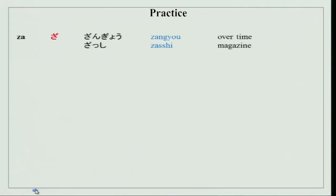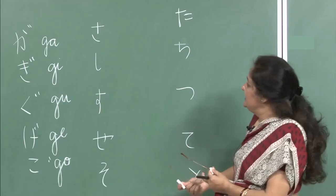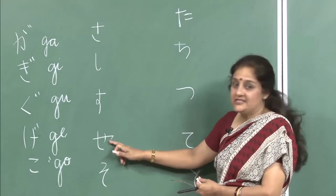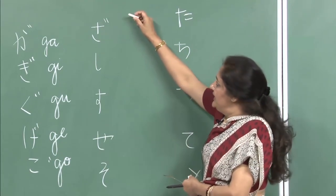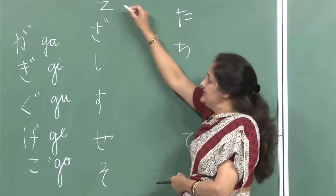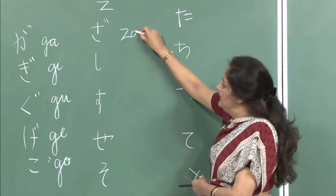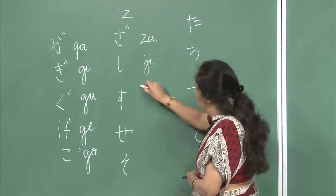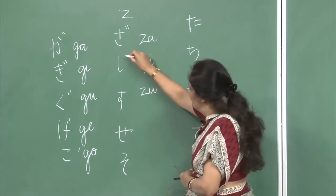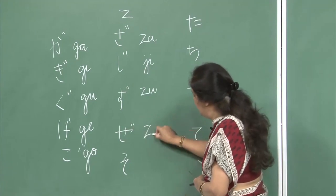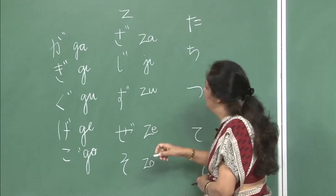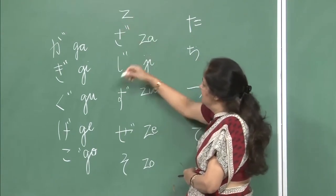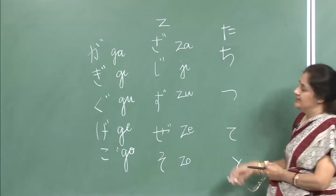Now, again, we did in the first set sa, shi, su, se and so. Just by adding this symbol over here, we get the zed sound: za, ji, zu, ze and zo. Just by adding these two symbols in the sa set, we get the za sound.